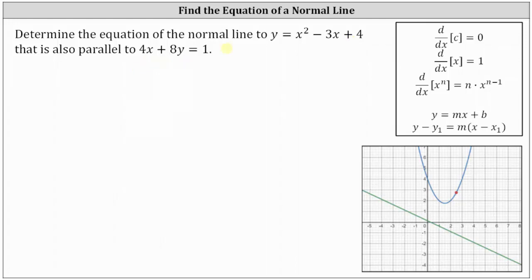Remember, a normal line to a curve is perpendicular to the tangent line at the point of tangency. So if we take a look at this graph below, the green line is the line given by 4x plus 8y equals 1. We're looking for the normal line to the curve that is parallel to this green line. And if this green line is parallel to the normal line, it would also be perpendicular to the tangent line.